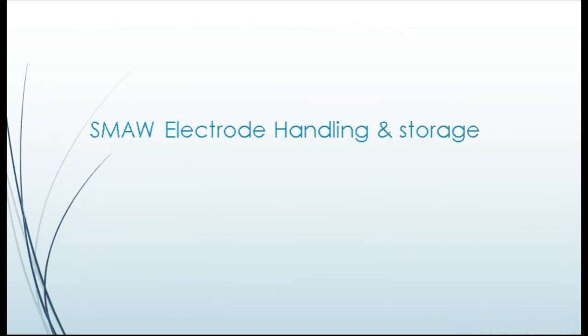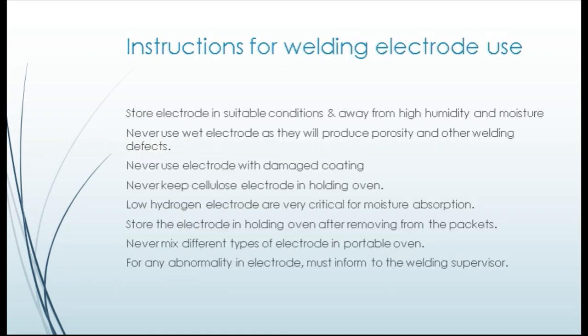Important points regarding electrode handling and storage: 1. Store electrodes in suitable conditions away from high humidity and moisture. 2. Never use wet electrodes as they will produce porosity and other welding defects. 3. Never use electrodes with damaged coating. 4. Never keep cellulose electrodes in a holding oven. 5. Low hydrogen electrodes are very critical for moisture absorption.